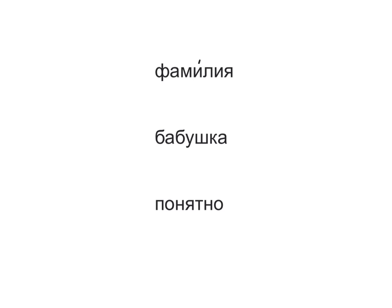Listen to these words and see if you can hear where the stress is. Фамилия — it means last name. Obviously it's related to the word family, but notice that while family is stressed on the first syllable, фамилия is stressed on the second syllable. Бабушка — here the stress is on the first syllable. Can you hear it? Бабушка. How about понятно? Where's the stress? Понятно — it's on the second syllable.